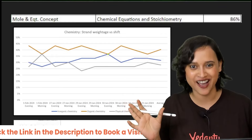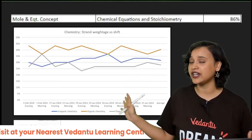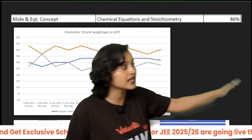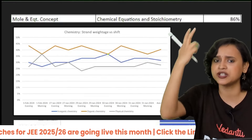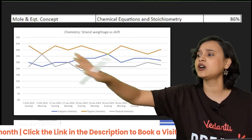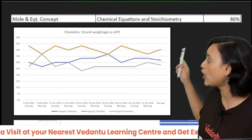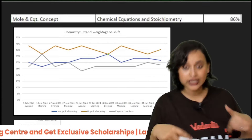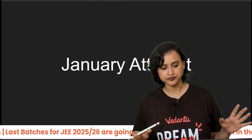It is a very important chapter. Don't just look at the 2.3% figure — this is a fundamental chapter linked with all other chapters like redox, electrochemistry, thermodynamics, d- and f-block, and wherever you have chemical equations. Even some organic chemistry questions deal with mole concept and stoichiometry, so you have to solve the questions.